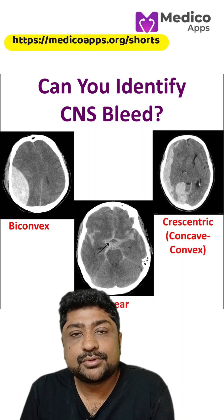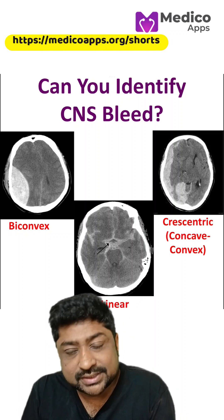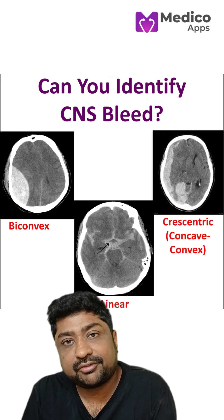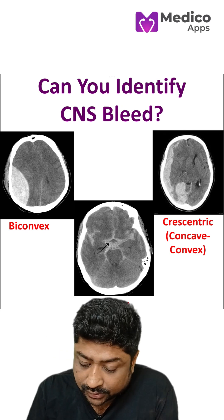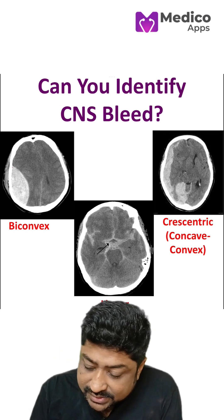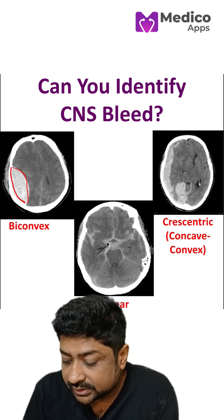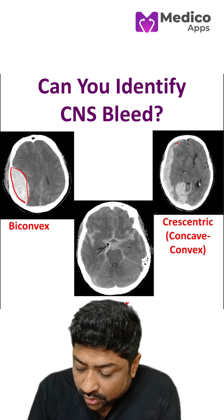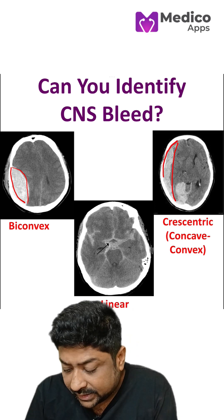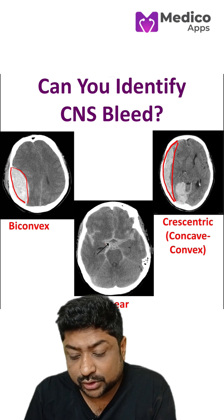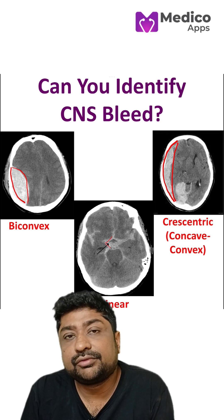Very frequently in your exams you will be shown a CT brain and you will be asked to identify the type of the bleed. So there are three images which we are seeing here: one is having a biconvex bleed, one is having a concavo-convex or crescentic bleed, and the third is basically having a linear bleed. So let's look at each one of them one by one.